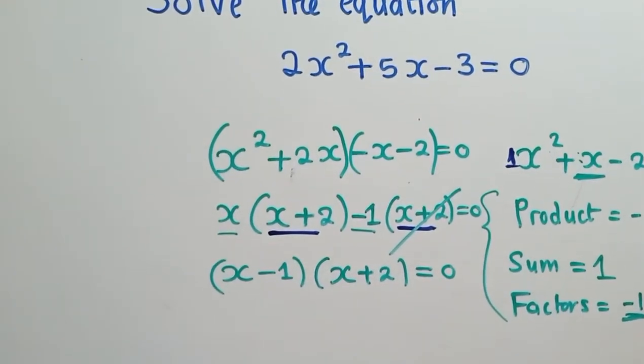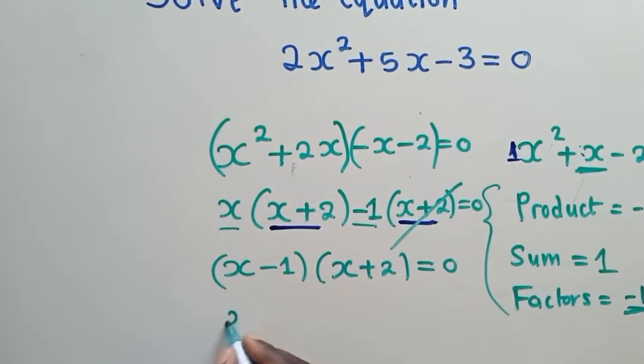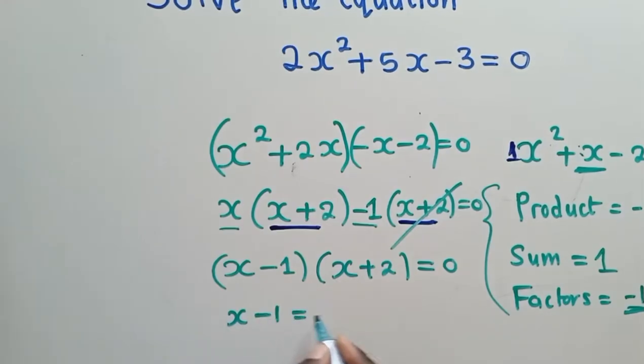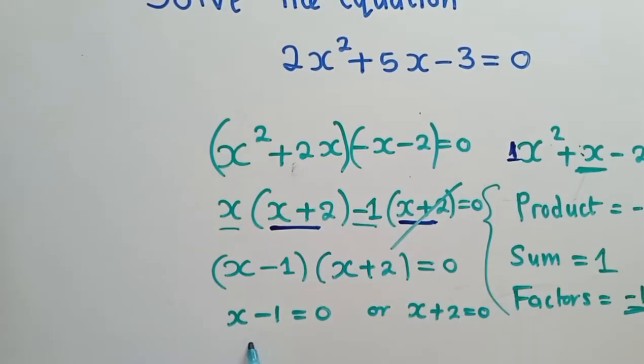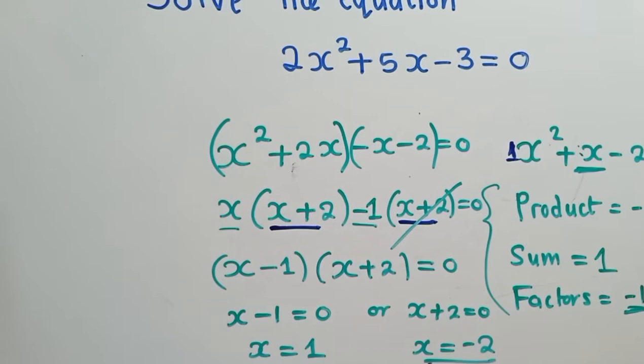So now from this point you say x minus one is equal to zero or x plus two is equal to zero. Just get this equal to zero or this equal to zero. Okay, next you solve. We shall have x is equal to a one. This one come this side, it will be equal to the one. Here this one come this side, it will be equal to negative two. So these are the two solutions for the example you have right here.